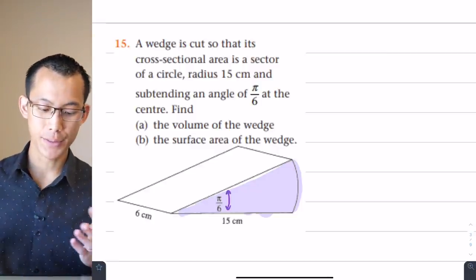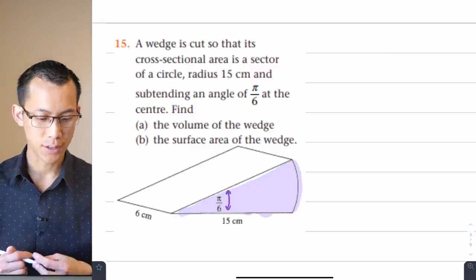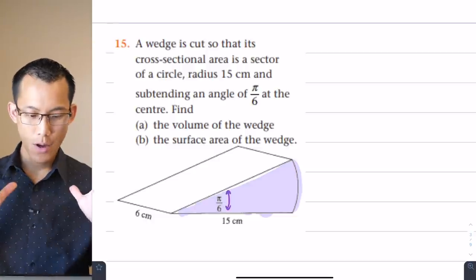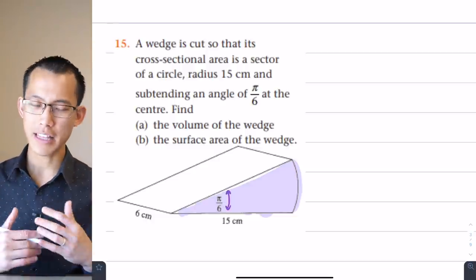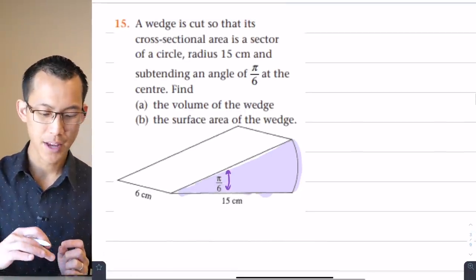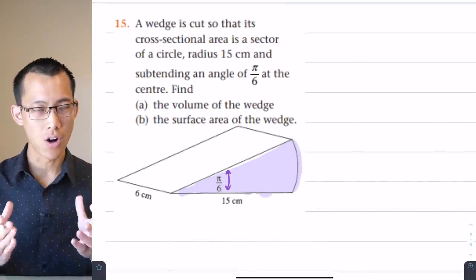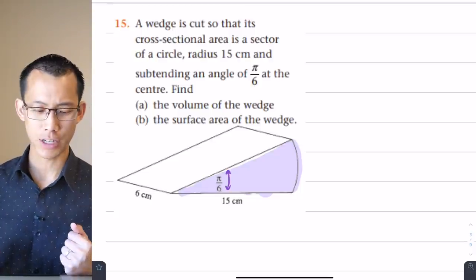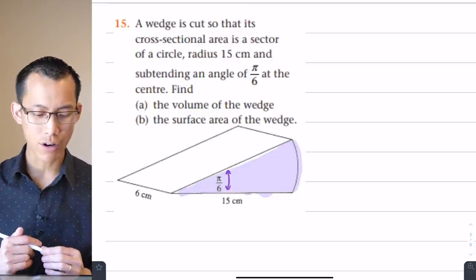Find part A, the volume, part B, the surface. Alright, so how do we think about this? Well, to start with, when we think about this wedge, it's a weird kind of shape. We don't deal with wedges very frequently. This wedge is part of a bigger shape. What is that bigger shape that this wedge was cut out of?